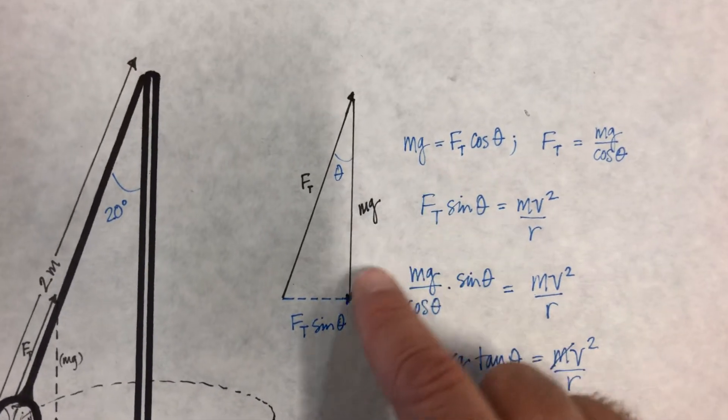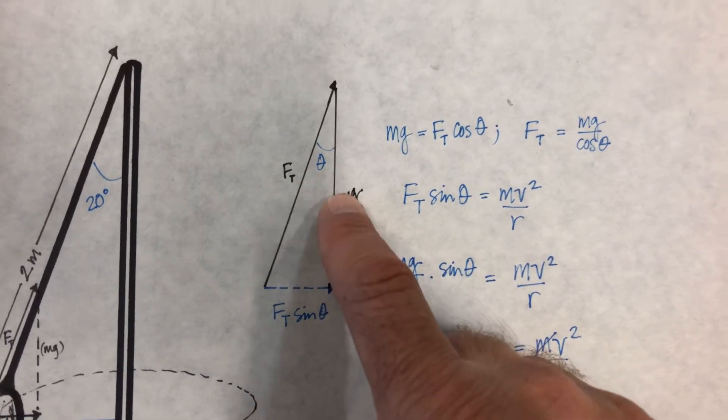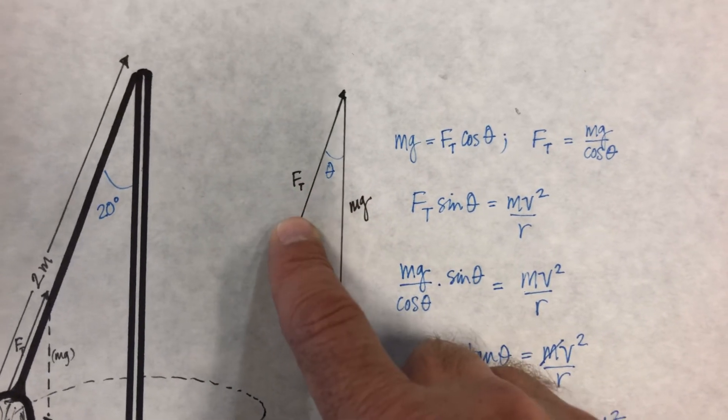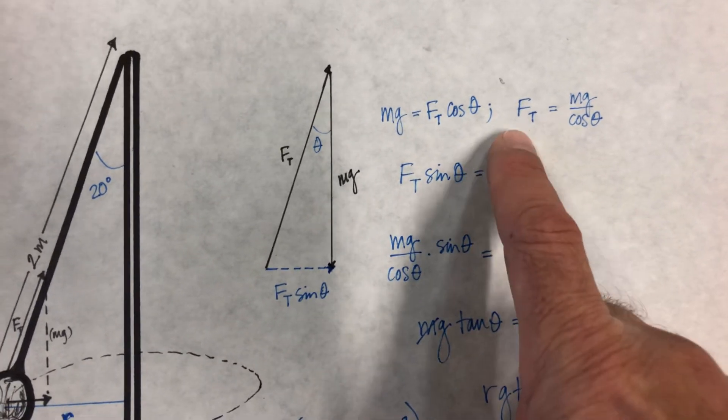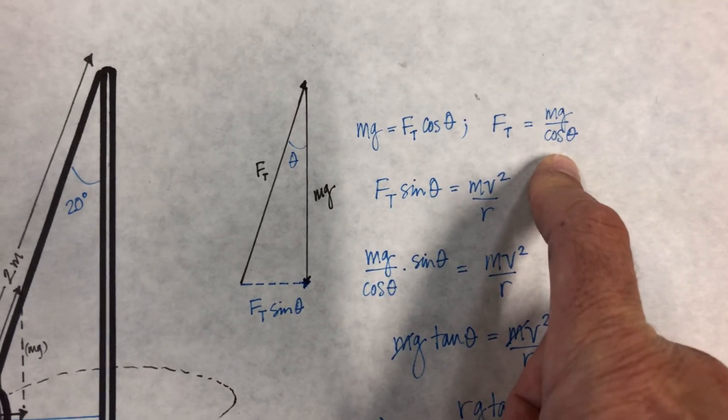So mg is the adjacent side to this. Ft is the hypotenuse, so Ft cosine theta would be mg, and that means Ft is mg over cosine theta.